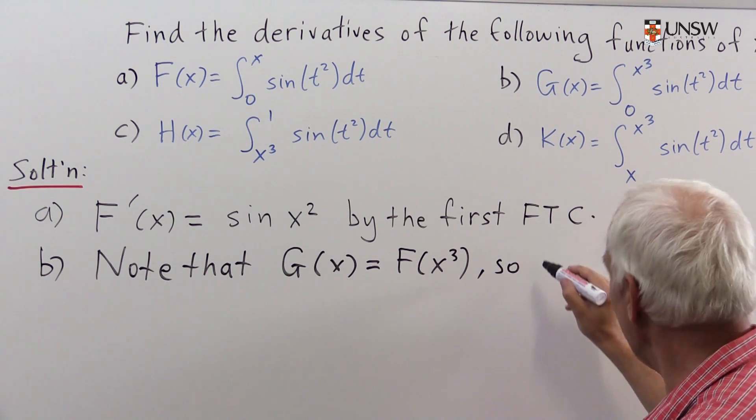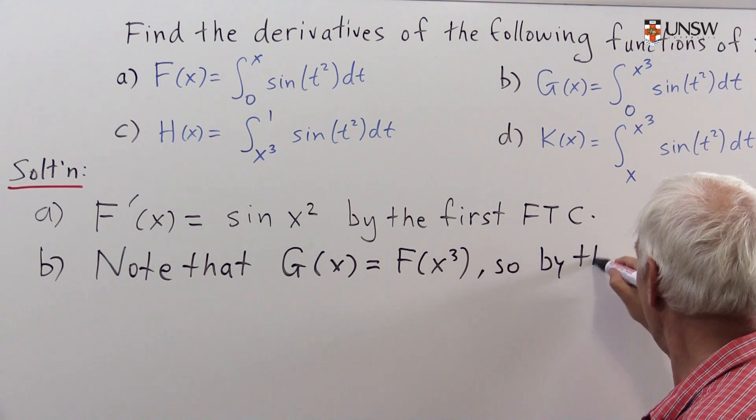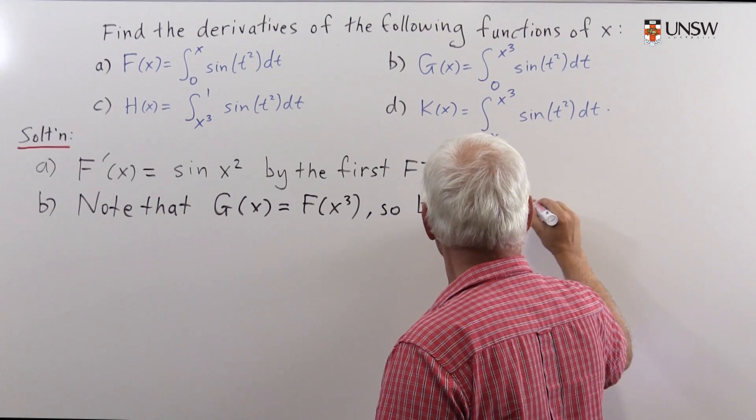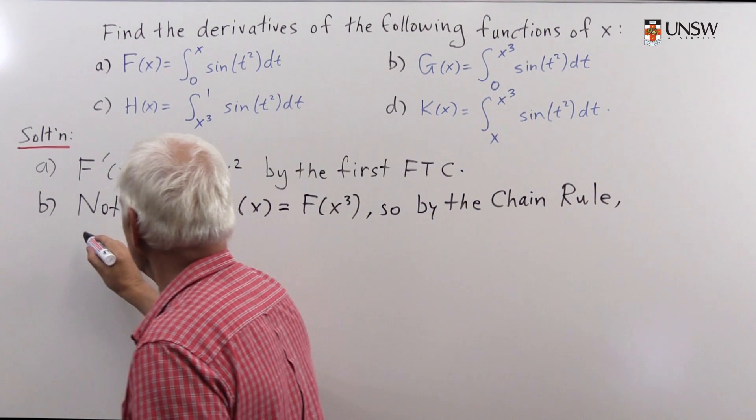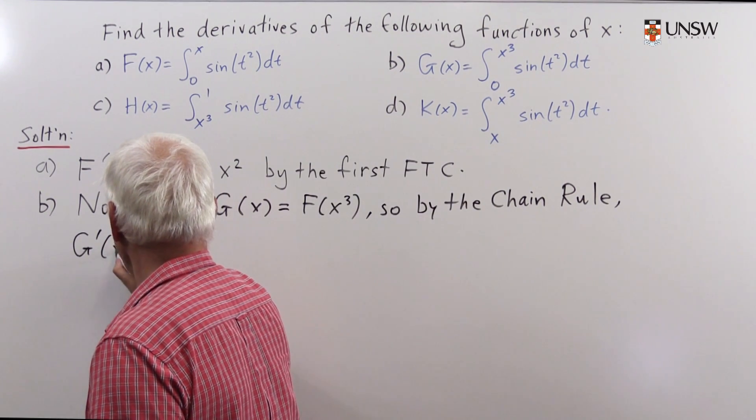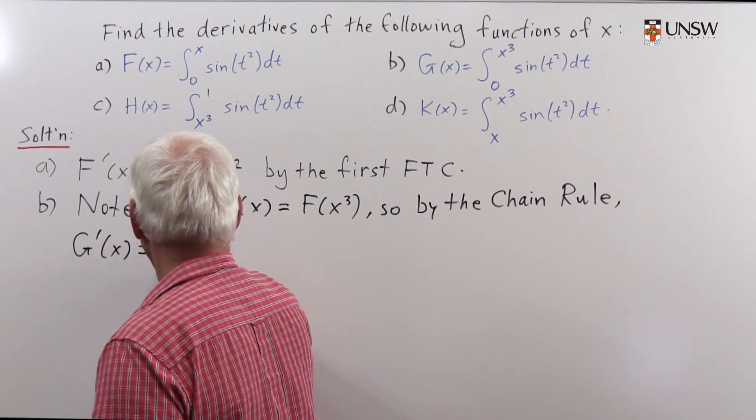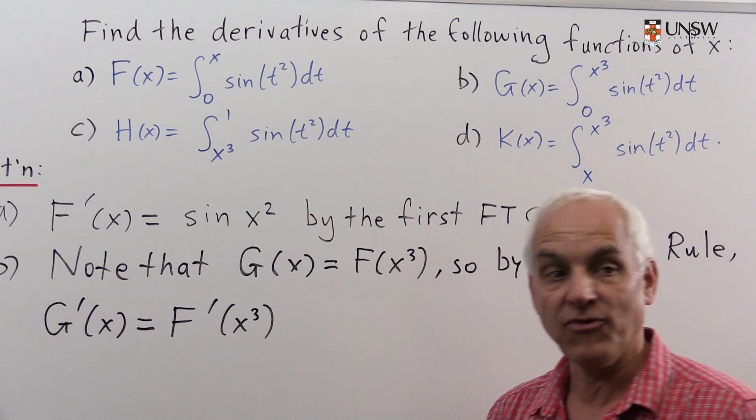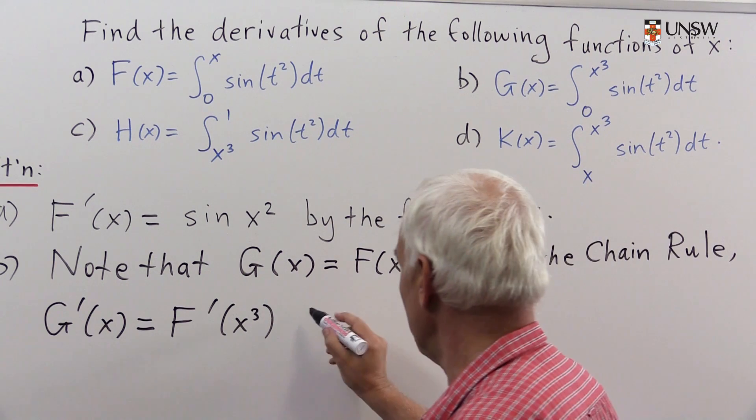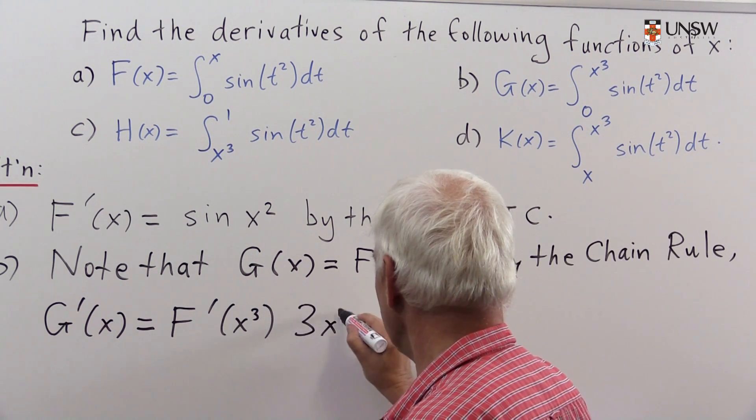By the chain rule, G'(x) equals F'(x³) times the derivative of x³, which is 3x².